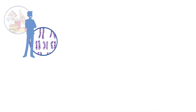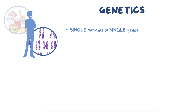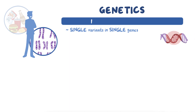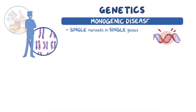In human disease, both environmental and genetic factors are important, and there are two general ways genetics can play a role. For some diseases, single variants in single genes can have a very large impact, meaning they can actually cause a disease all on their own. These are called monogenic diseases and are usually quite rare.